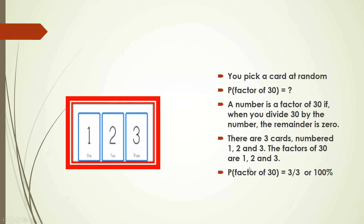The factors of 30 include one, two, and three. If we divide 30 by one, the remainder is zero. If we divide 30 by two, the remainder is zero. Similarly, if we divide 30 by three, the remainder is zero. So all three numbers are factors of 30. The probability is three divided by three, which equals 100%.